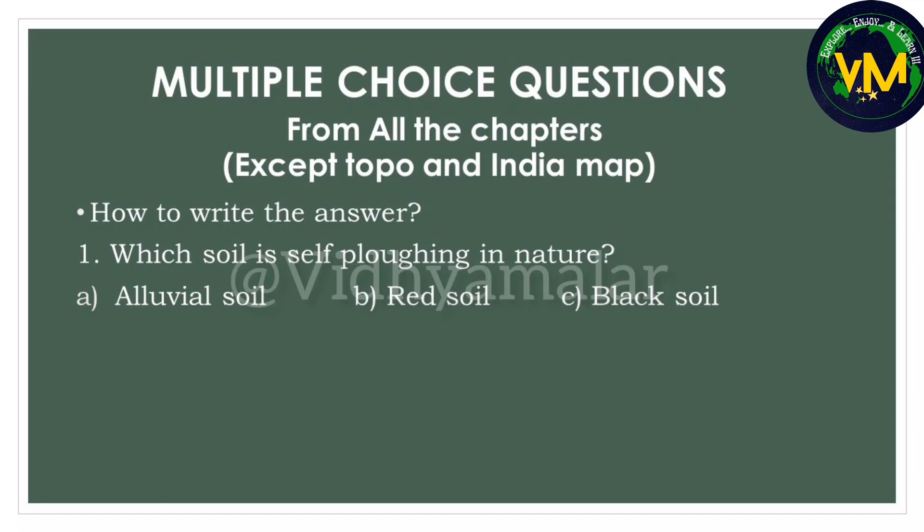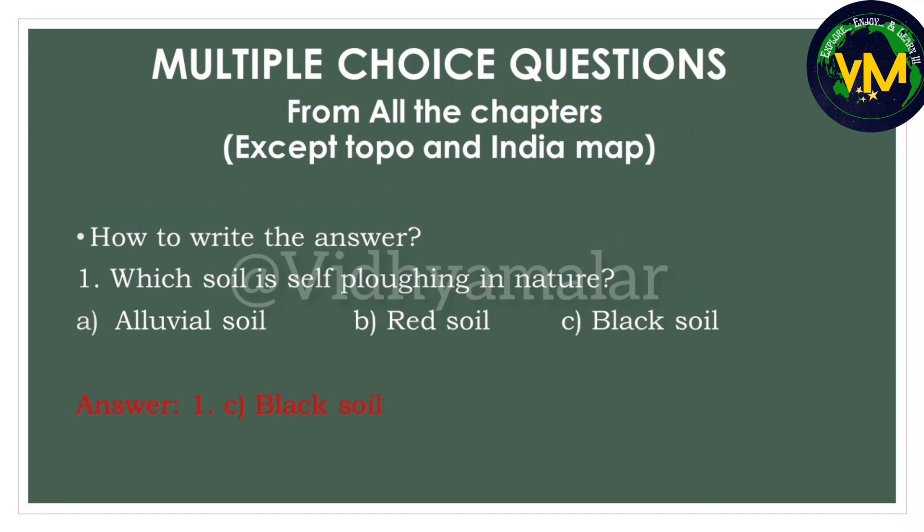Now the next doubt is how to write the answer - should we write the question and the answer, or just the question number and the option? For example, which soil is self-ploughing in nature? The answer is option C, black soil. So the answer should be written as: question number 1, option C, black soil.